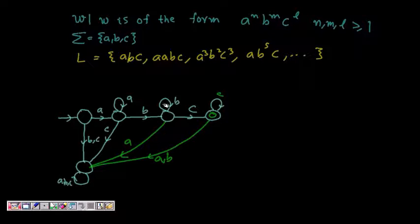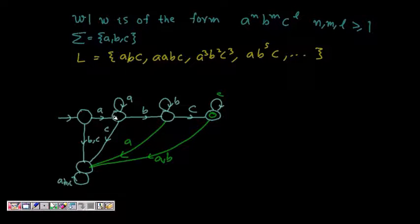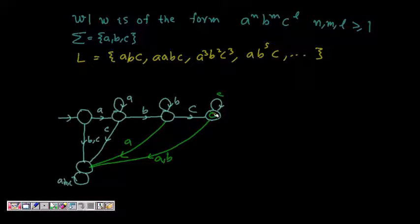So this is the DFA for the string of the form a^n b^m c^l. The transitions requiring at least one of each symbol are necessary. If you got 'b' or 'c' initially, you go to the dead state. After getting 'a', if you get a 'c', dead state. After getting a, b, if you get 'a' again, dead state. After perfectly getting a^n b^m c^l, if you get 'a' or 'b' again, you go to the dead state.